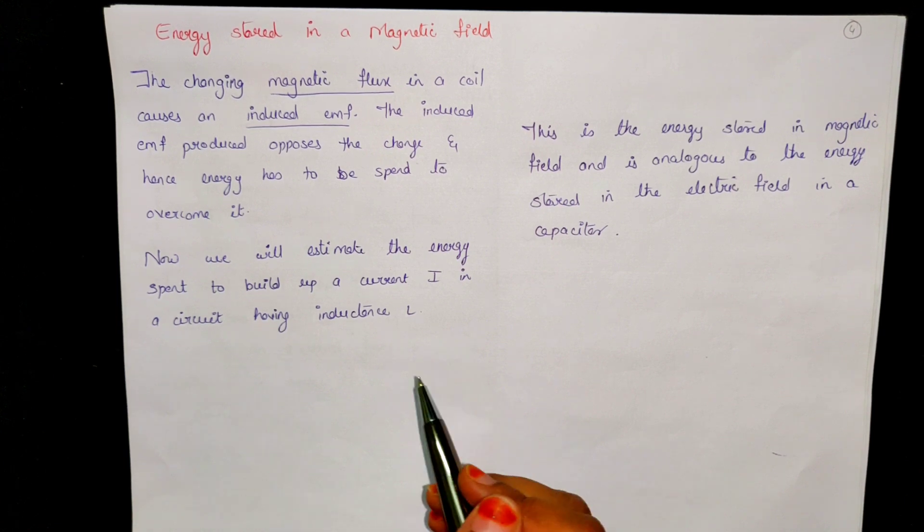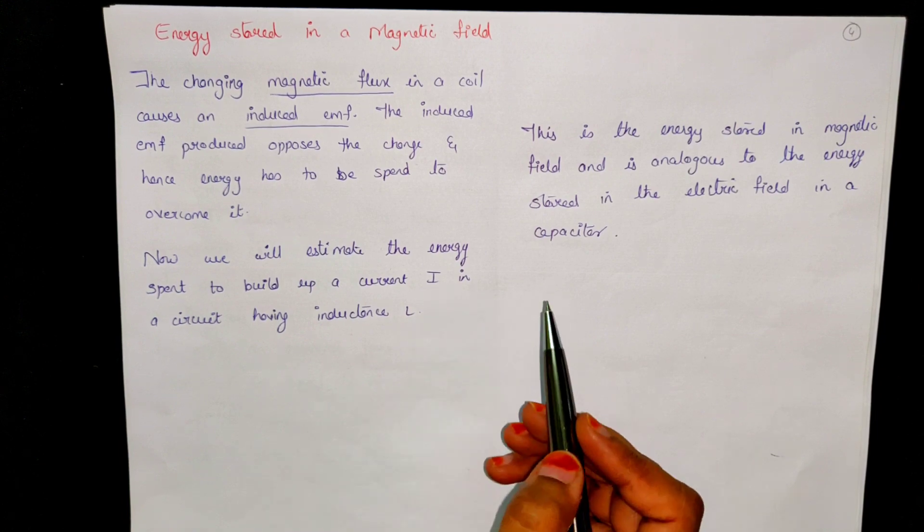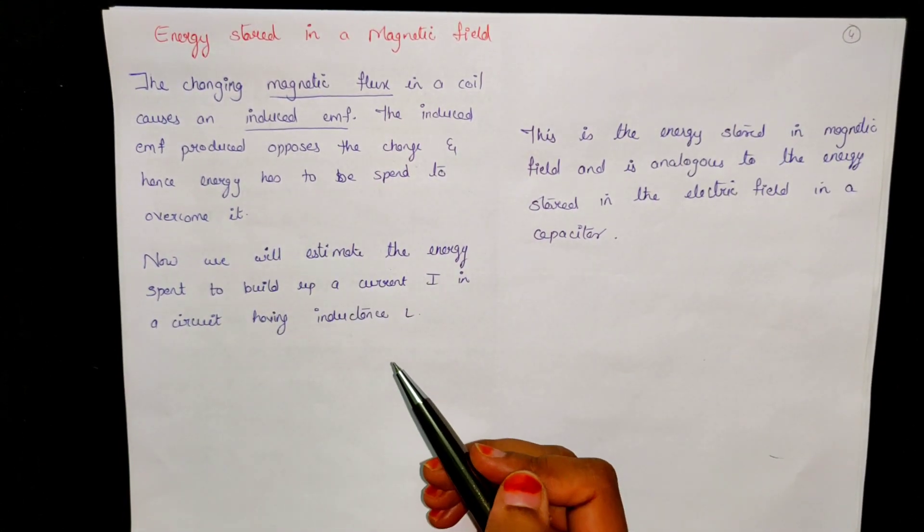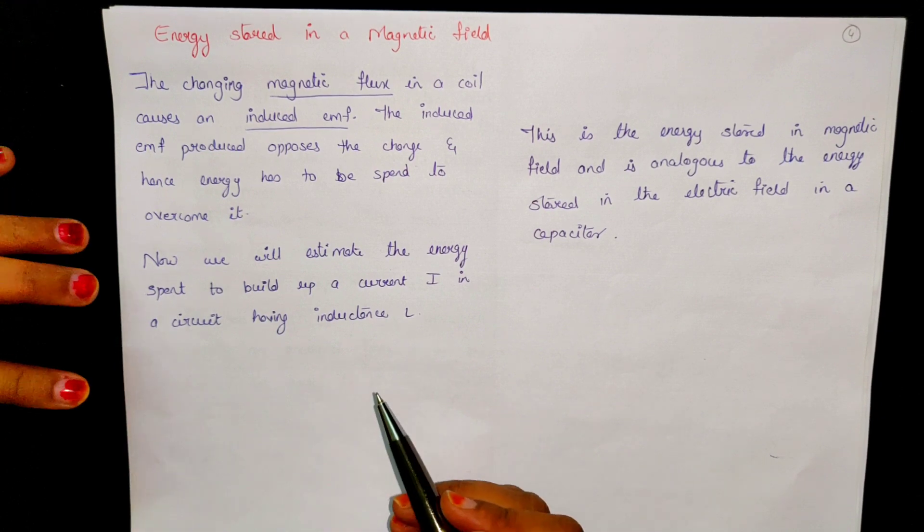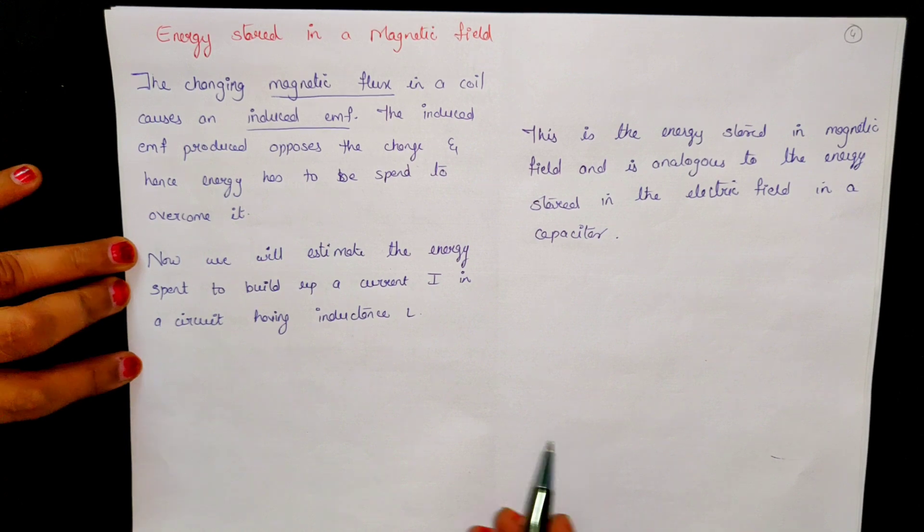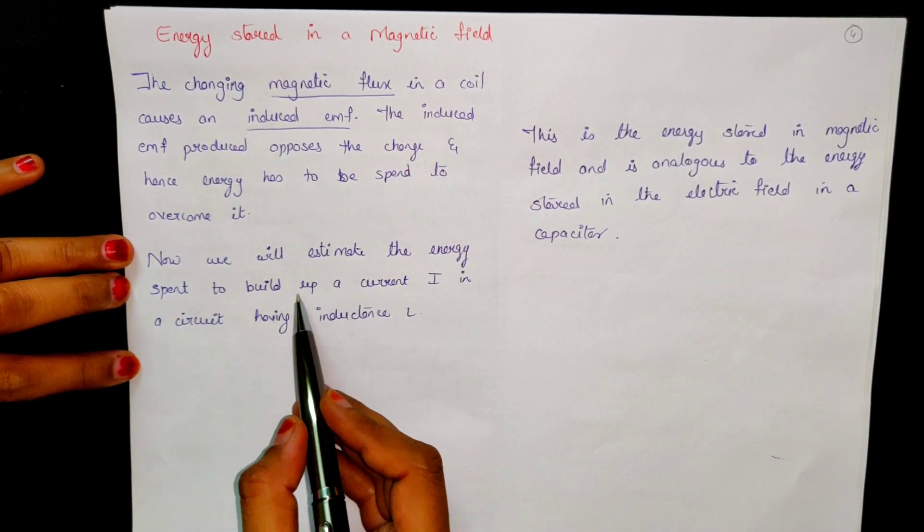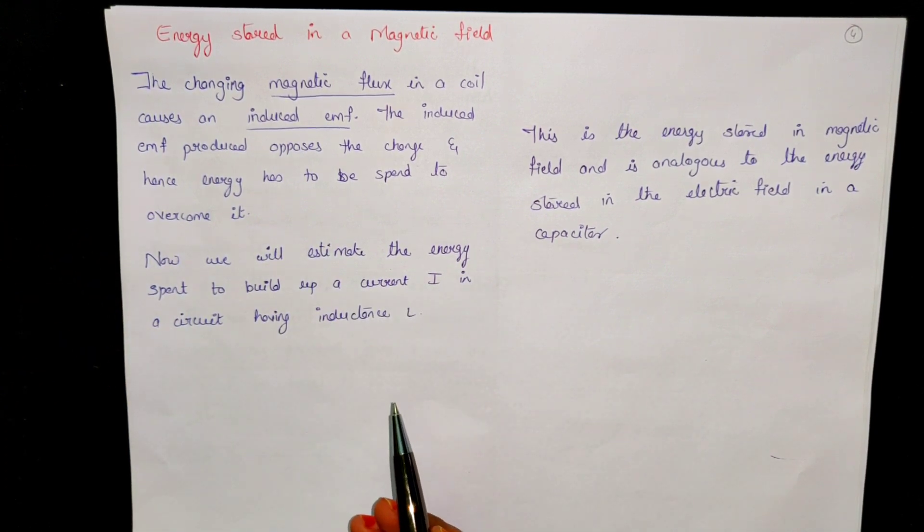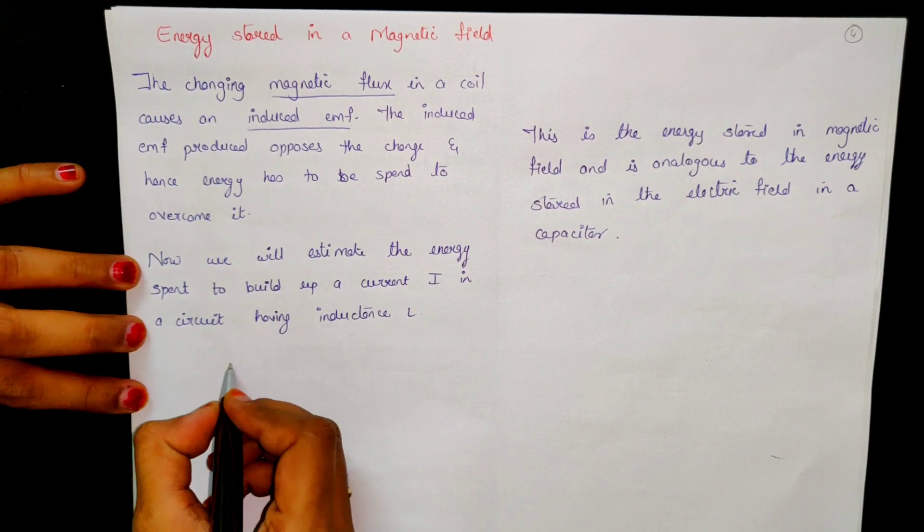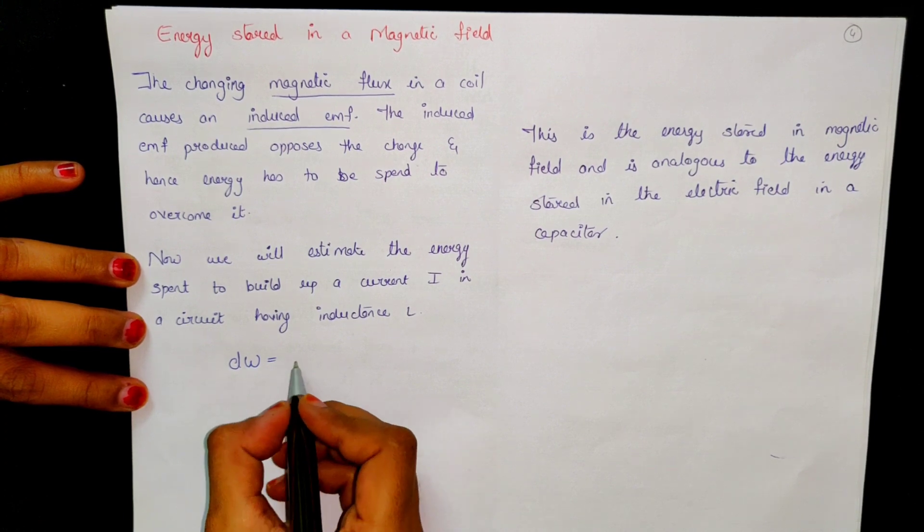So now it is opposing, so we have to overcome it because we have to spend energy. We want the current should flow in this circuit, but it will oppose it. Then we have to push ourselves, we have to do certain work and that work gets stored inside it in the form of energy. Now we will estimate the energy spent to build up a current i in a circuit having inductance L.